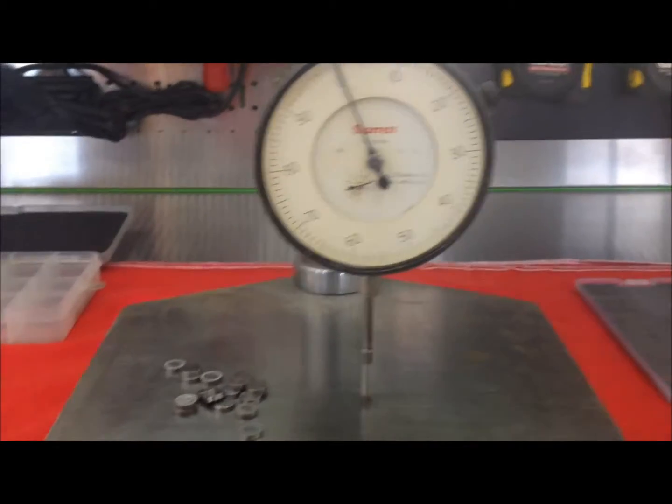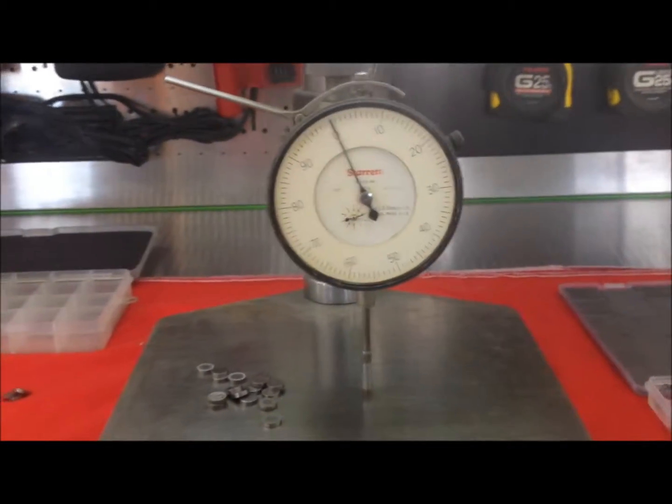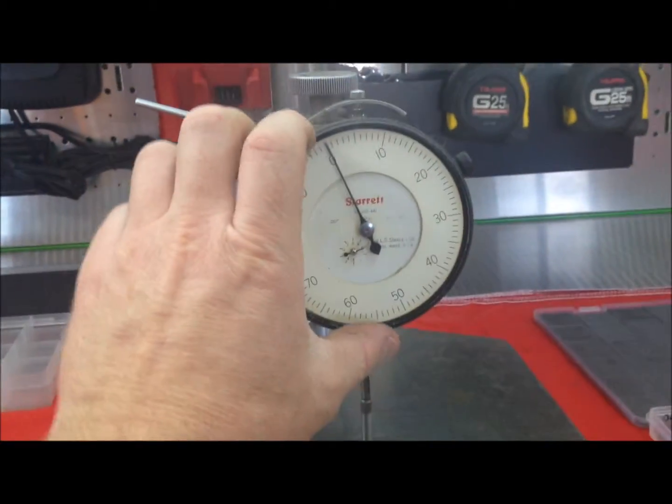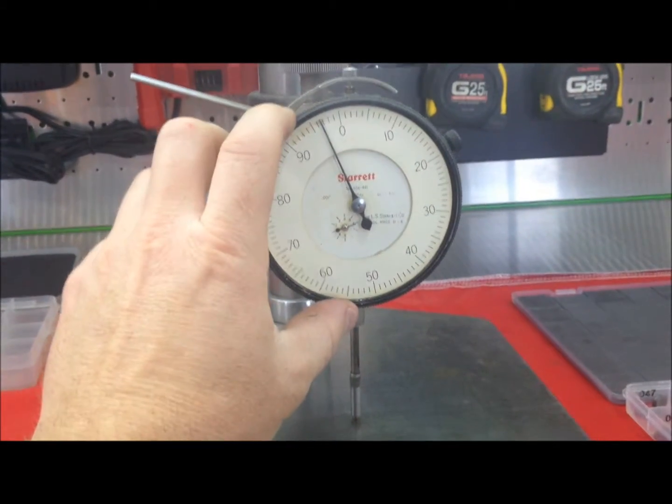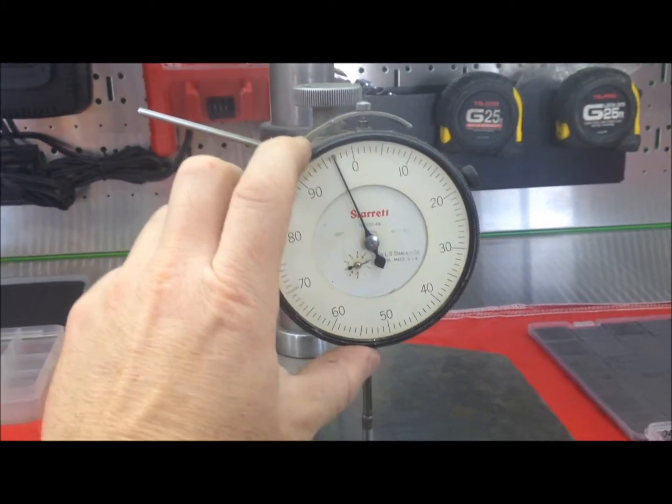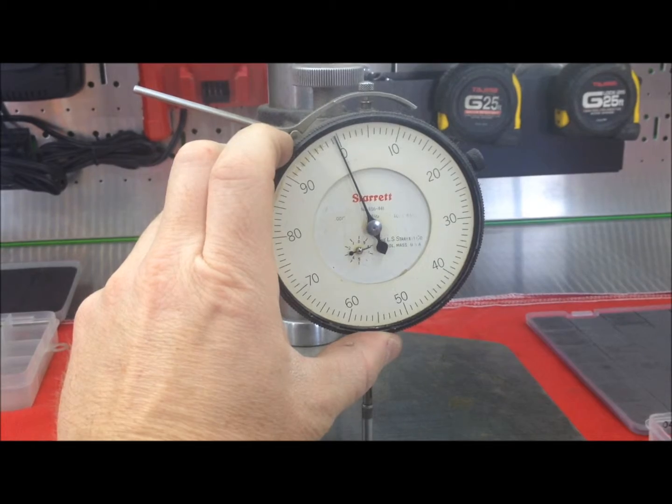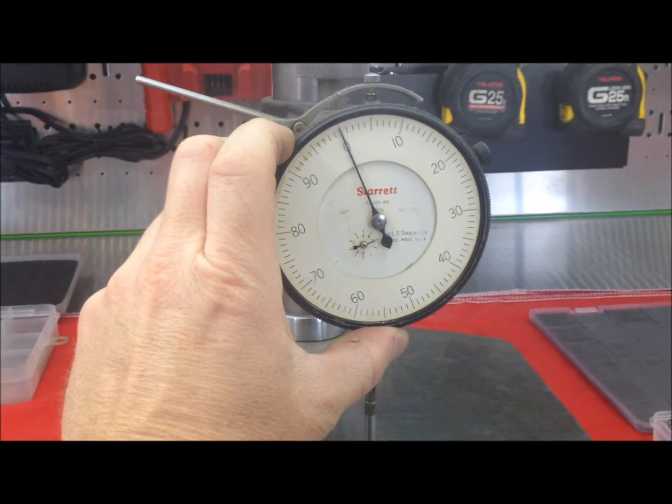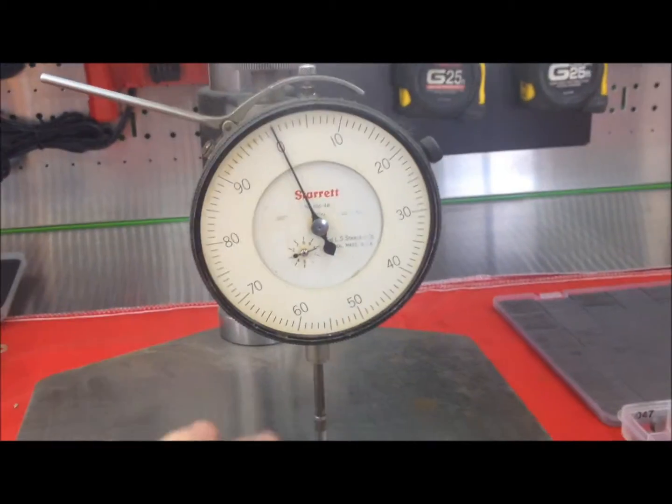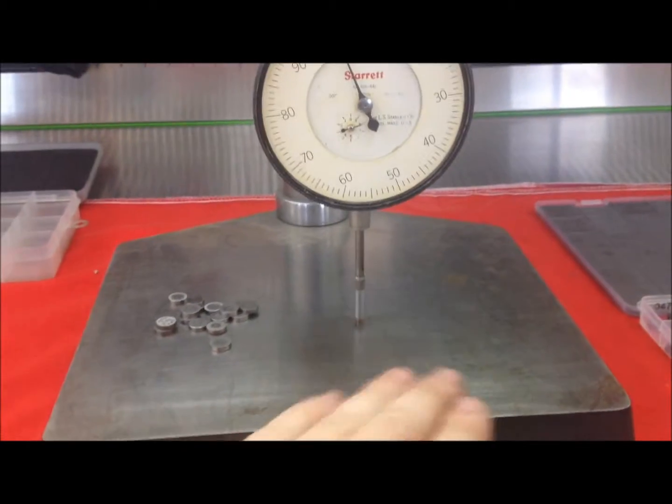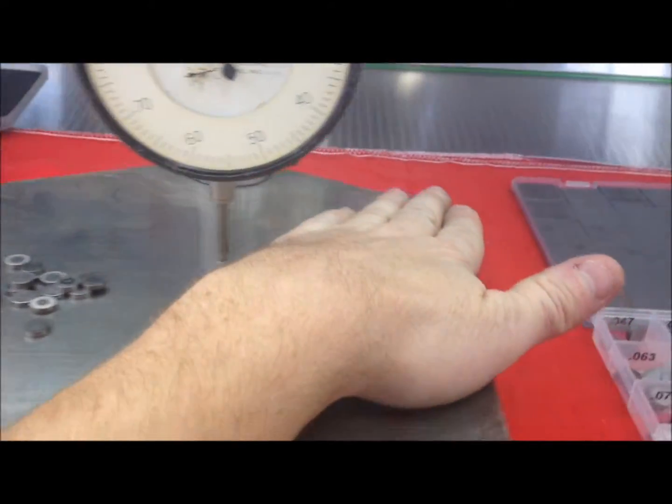Alright, first we're going to need to set up our surface plate here and our starrett dial indicator. So we're just going to run this down and we're going to zero our indicator, so it's right on zero and the next thing we need to do before we do anything is we need to wipe this surface plate completely clean.